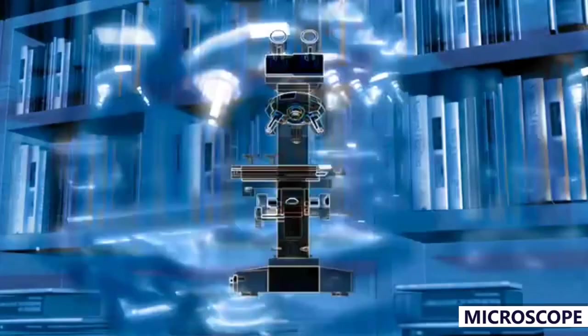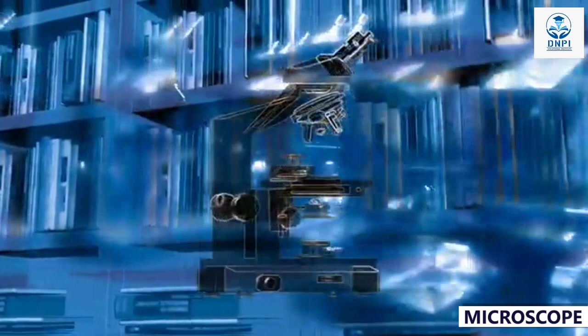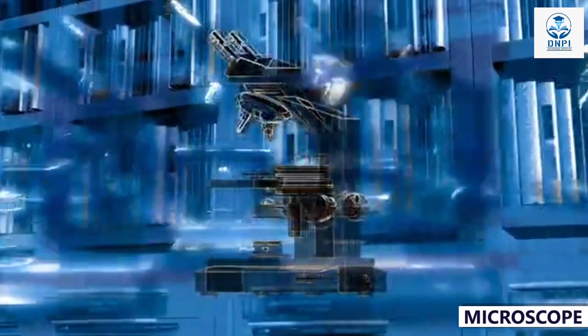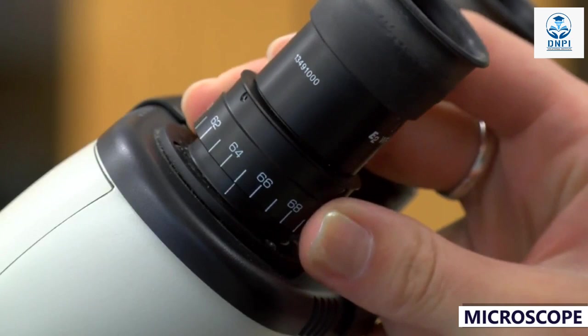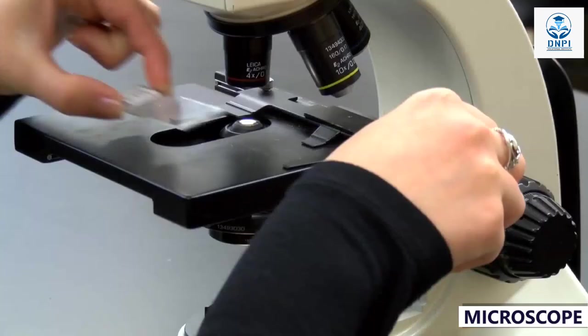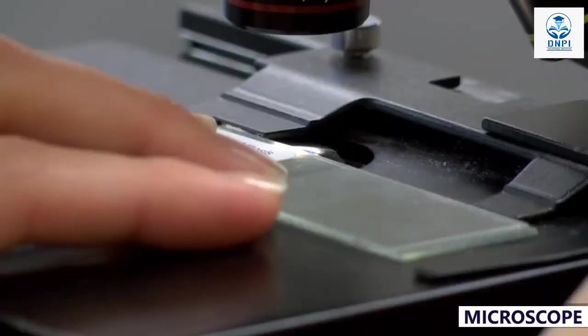This video is brought to you by DNPI Delhi. Today we will talk about the basics of microscope, so let's get started. A microscope is a scientific equipment that magnifies very small objects that are not visible to the naked eyes. Furthermore, with the help of a microscope, we can see the various organisms that we cannot see or study.